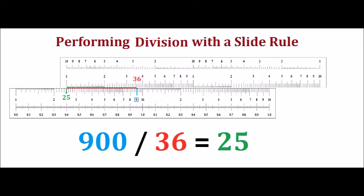Multiplication corresponds to addition. Similarly, division corresponds to subtraction. So, for example, consider 900 divided by 36.